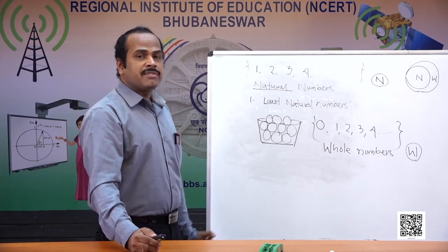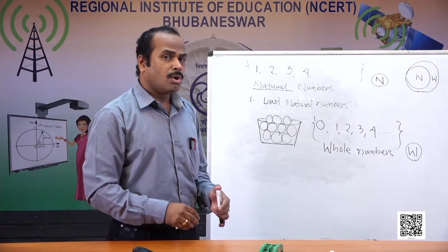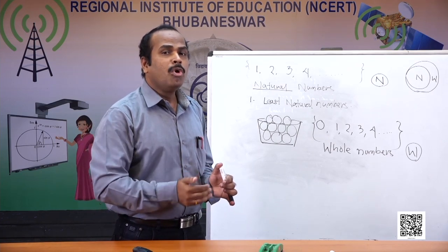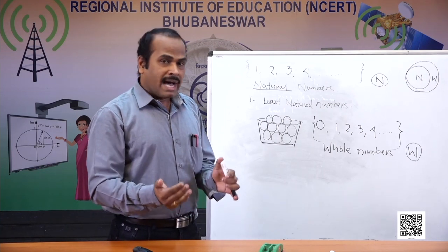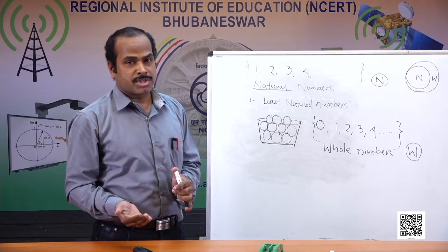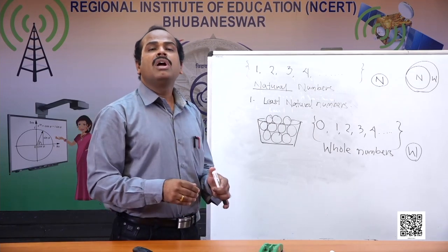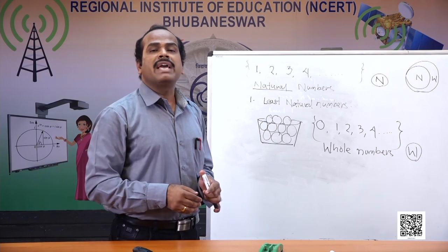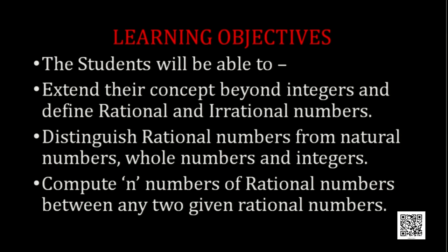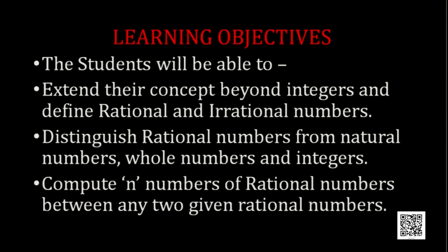Today we have already recapped natural numbers and whole numbers. Our purpose now is to discuss what more we are going to learn in this number system. By today's class we will be able to know the extent of this number system beyond natural numbers and whole numbers. You will come to know what integers are, what rational numbers are, what irrational numbers are, and we will distinguish rational numbers and irrational numbers from natural numbers, whole numbers, and integers.